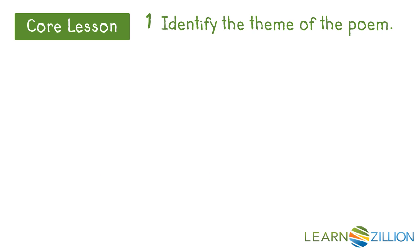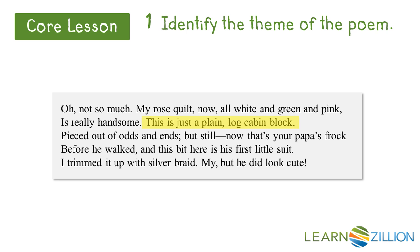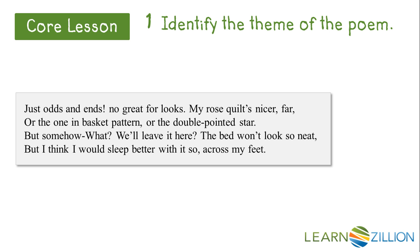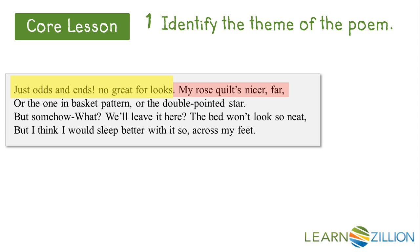Okay, in the beginning of the poem, the author writes, 'This is just a plain log cabin quilt, pieced out of odds and ends.' She compares it to her rose quilt, all white and green and pink, which is really handsome. Then at the conclusion of the poem, the author restates, 'Just odds and ends, no great for looks.' And again she says, 'My rose quilt's nicer far.' However, in the last line of the poem: 'The bed won't look so neat, but I think I would sleep better with it so across my feet.'